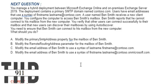You verify that other users can connect successfully to their mailbox and that new users can discover their mailbox using Autodiscover. You need to ensure Ben Smith can connect to his mailbox from the new computer. What should you use? Option A: Modify the primary SMTP address property for the email policy of Ben Smith. Option B: Modify the remote routing address parameter from the mailbox of Ben Smith. Option C: Modify the email address of Ben Smith to use the syntax lastname.firstname@contoso.com. Option D: Modify the email address of Ben Smith to use the syntax firstname.lastname@contoso.onmicrosoft.com. The correct answer is Option B.